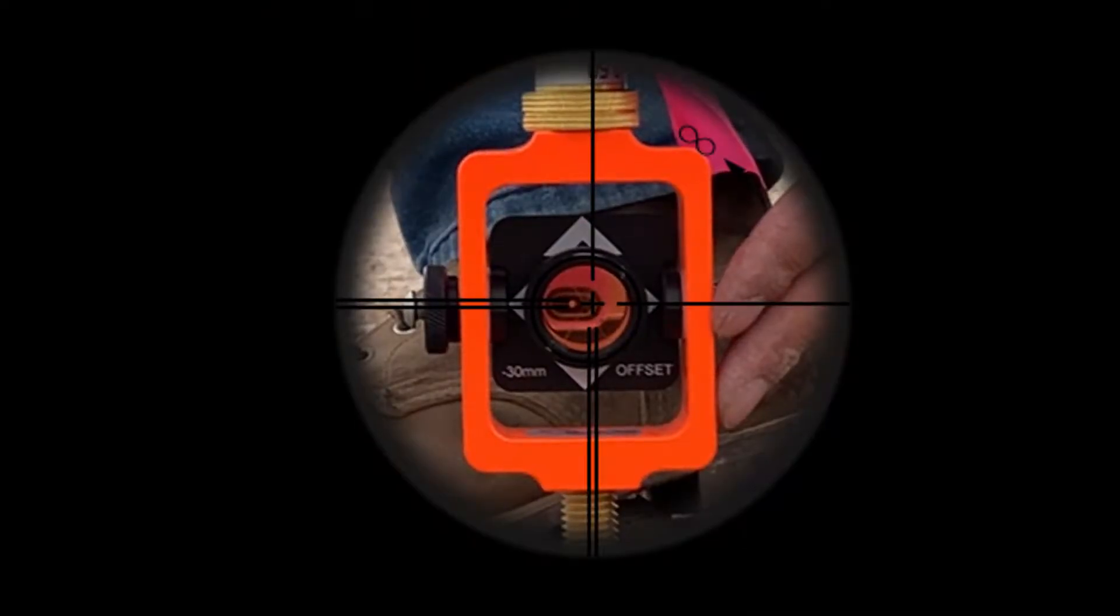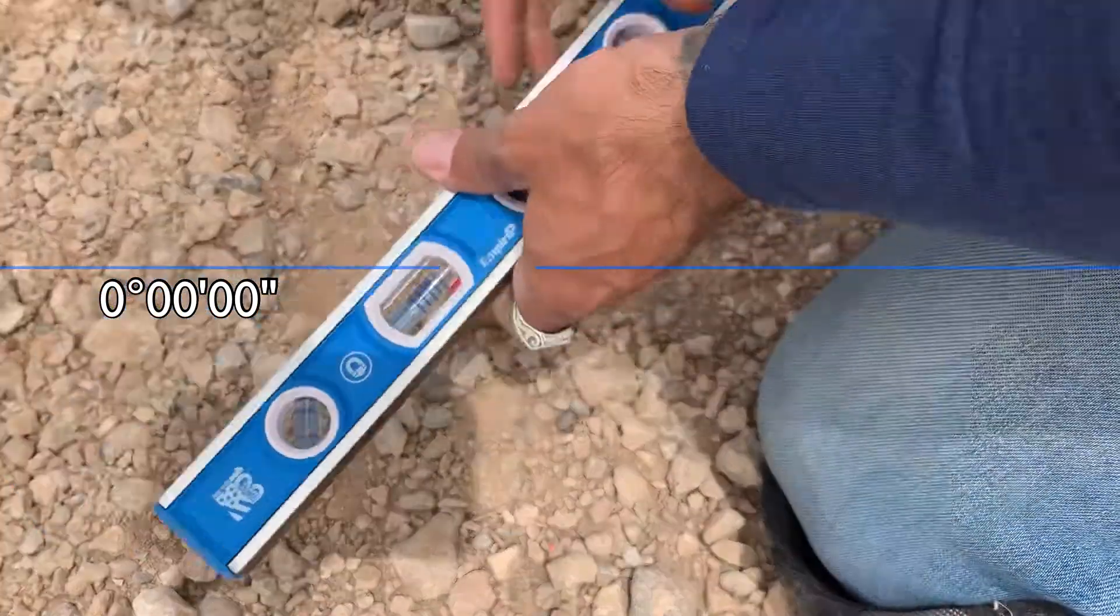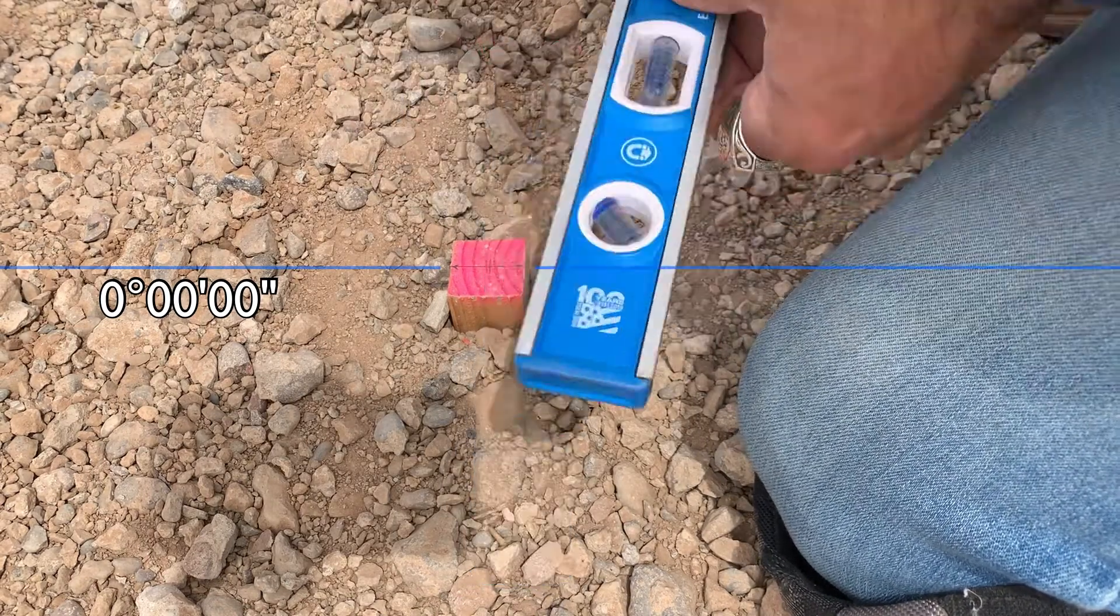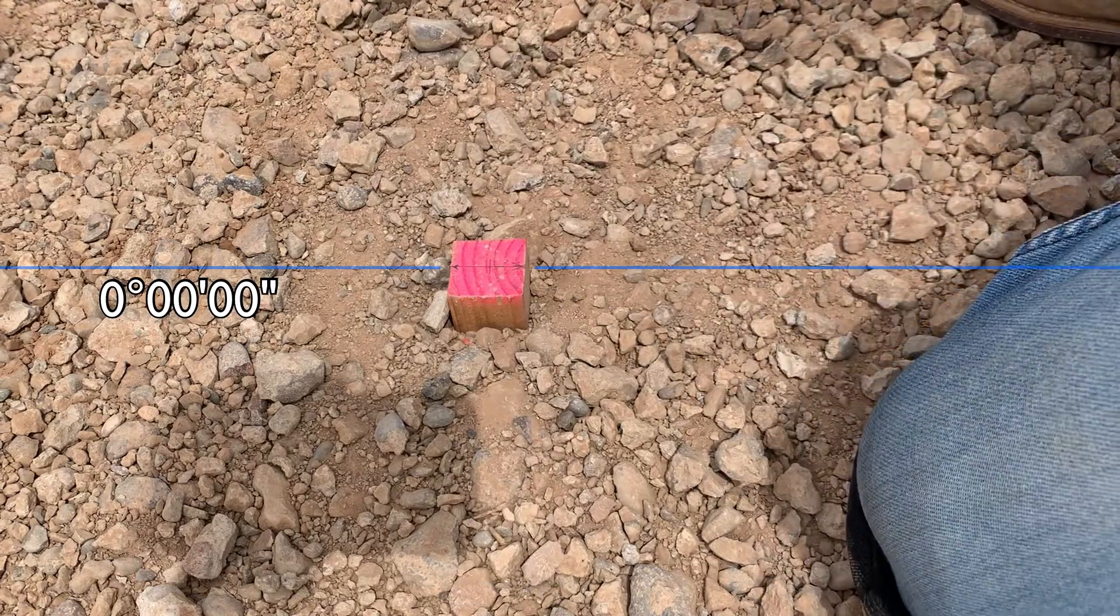For our distance, we're looking for better than five thousandths. Once we've determined the correct position, we'll reference it with a mark perpendicular to our existing baseline.